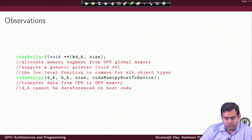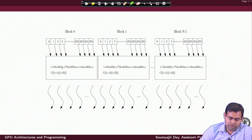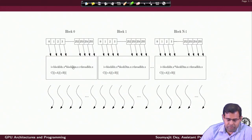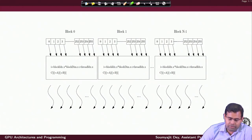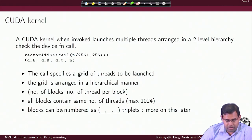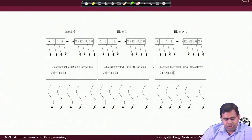Now let us go back to the picture of thread arrangement and try to understand what is happening. For every thread, I have a value of its block number. For example, for block 0, I have threads numbered from 0 to 255. For all these threads, the block ID is 0, the block dimension is 256, and the thread ID is any possible value from 0 to 255.